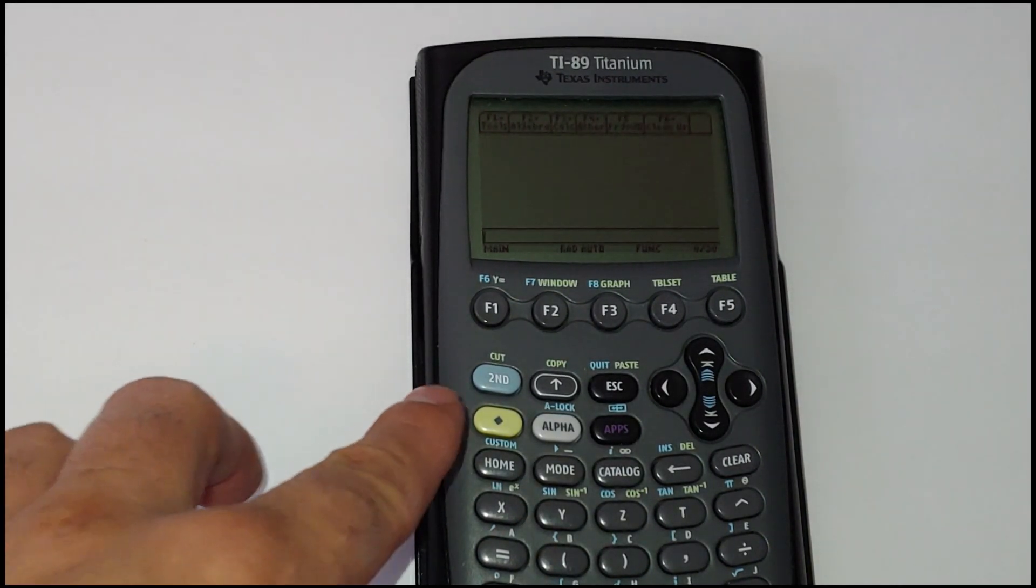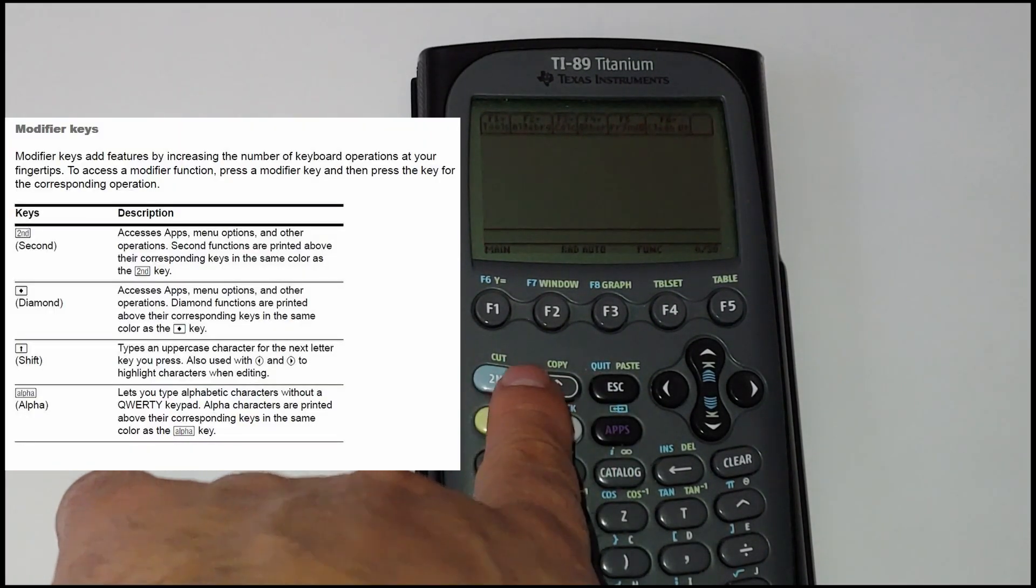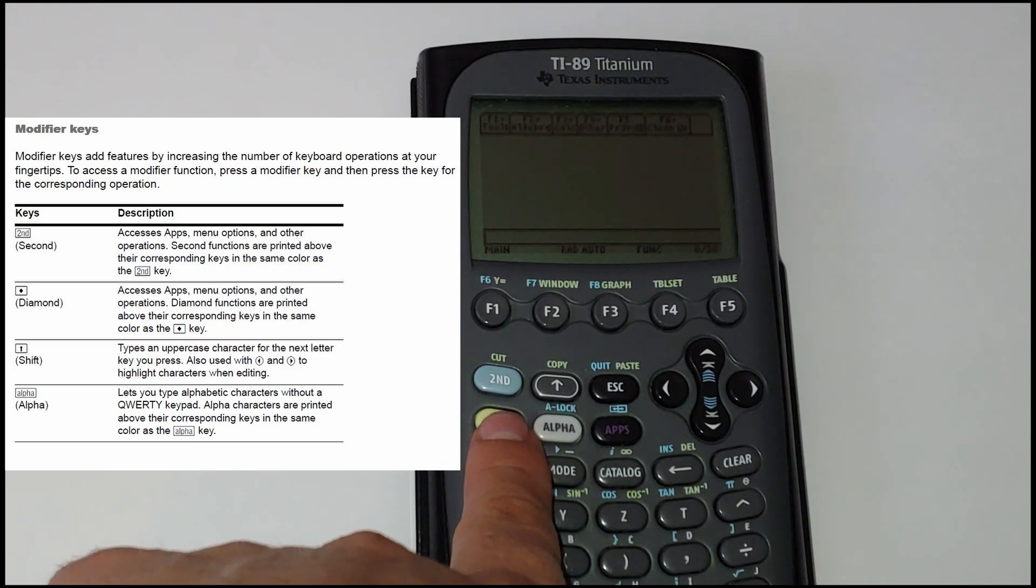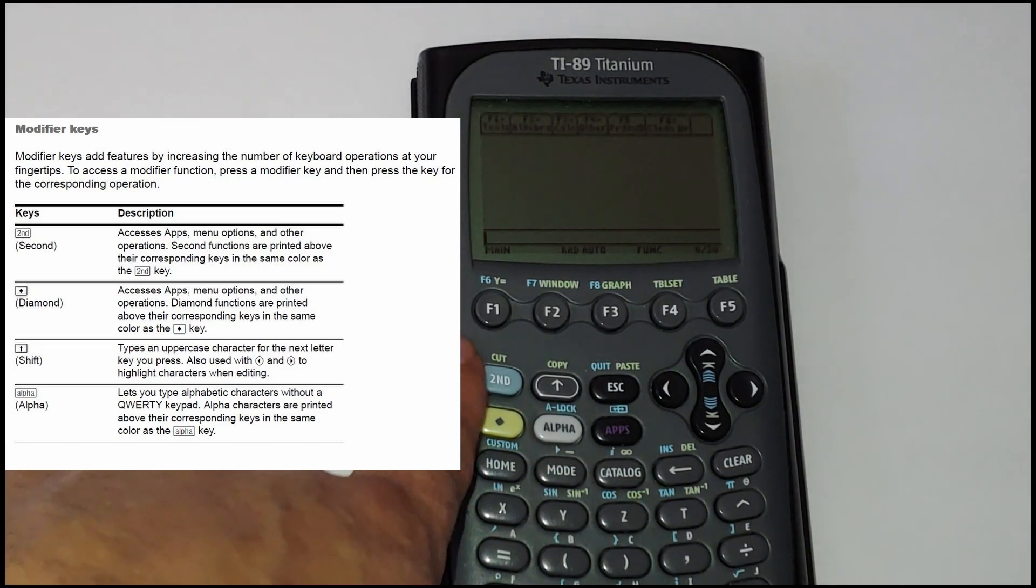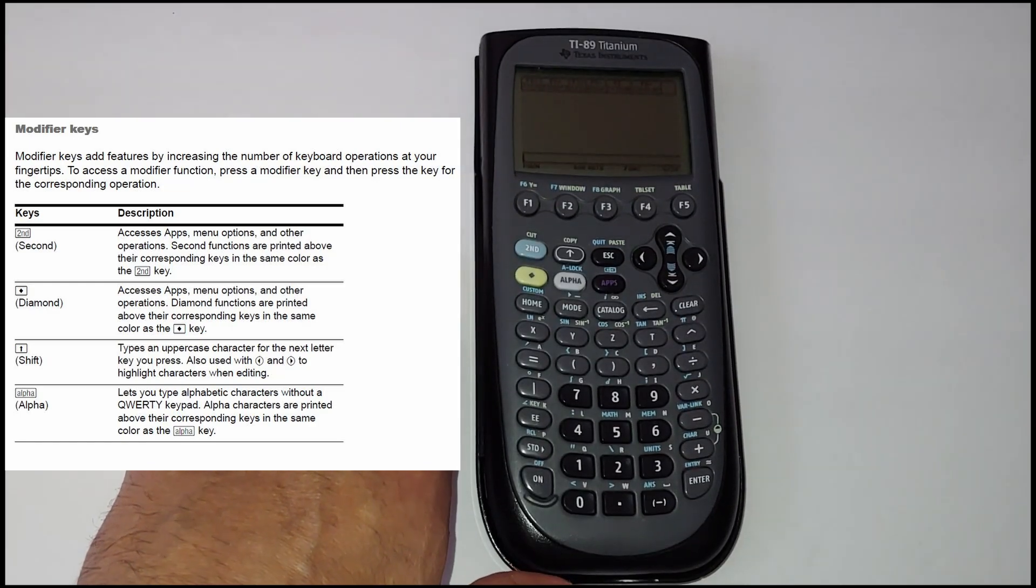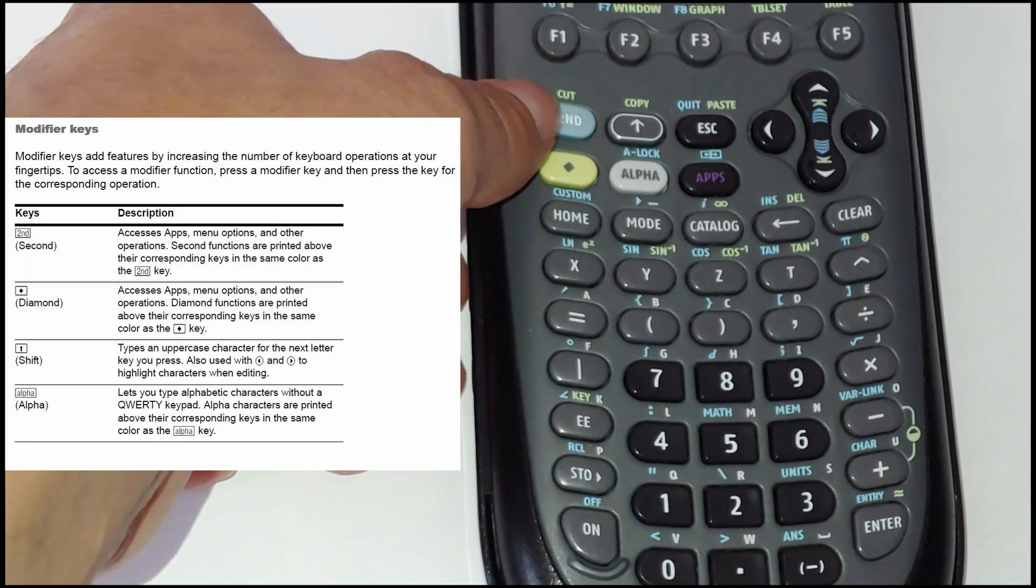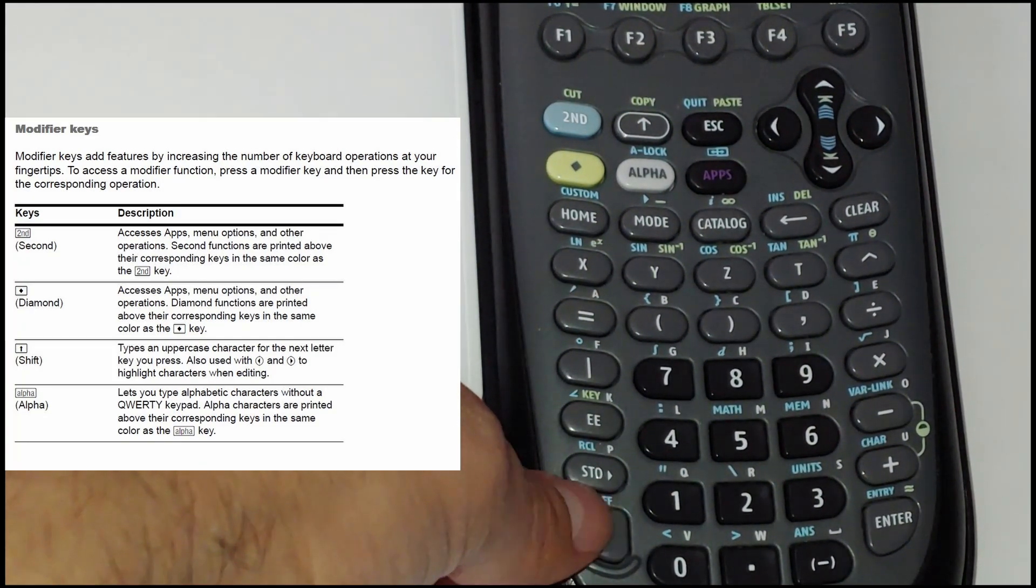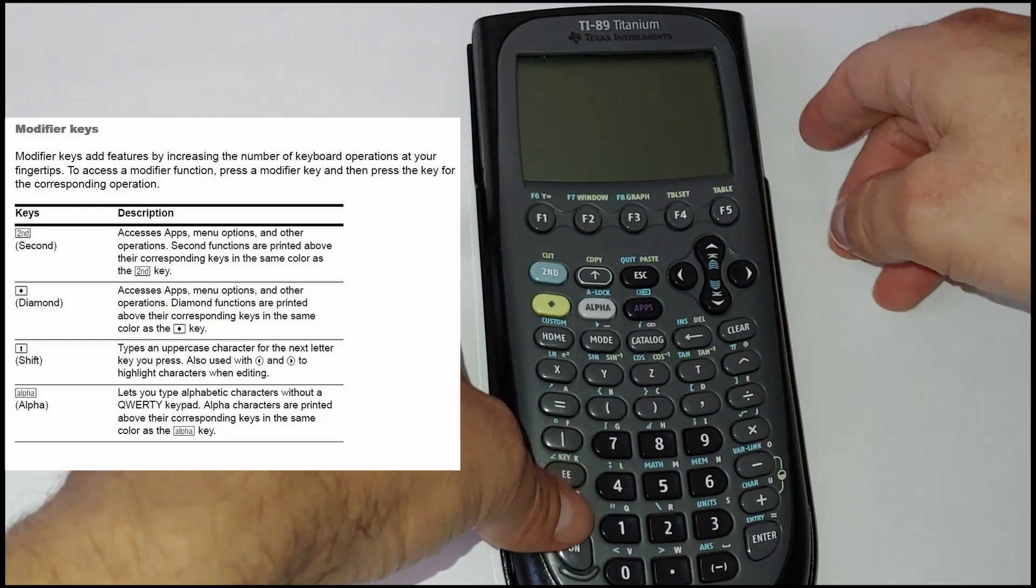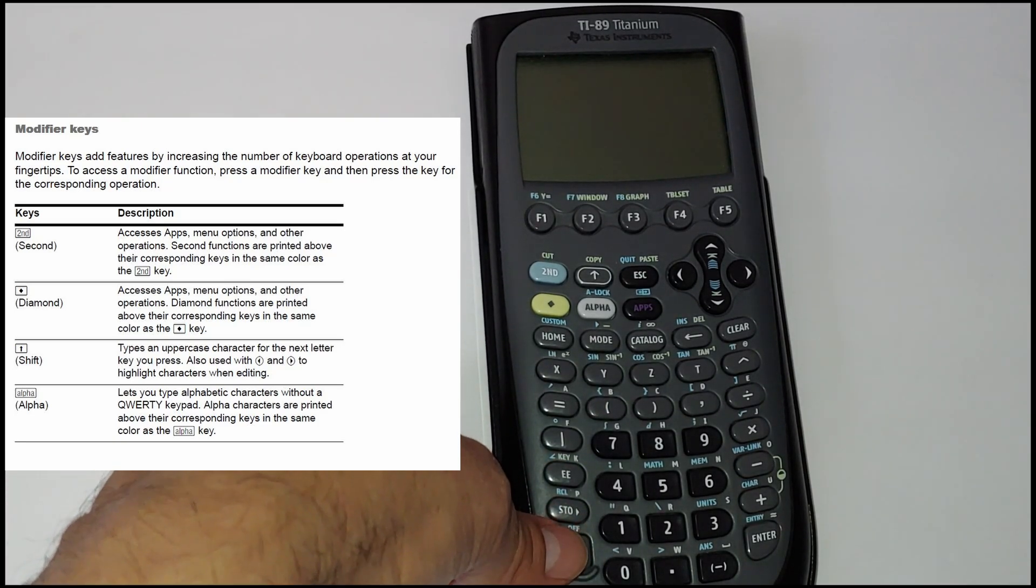Another one is that, just remember, notice that the calculator has green and blue commands on top. Well, those are related to the blue and the green button right here. So if you, for example, want to turn off your calculator, I will need to do second key, which is the blue one, and then the on button. That will command the off. And you guys can see it got turned off. So let's try this again, press on, it gets turned on. If I do second and on, it will actually turn off.